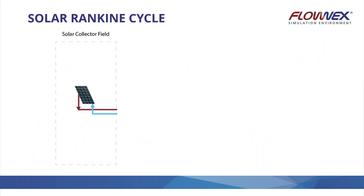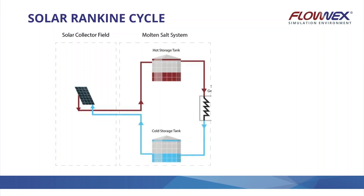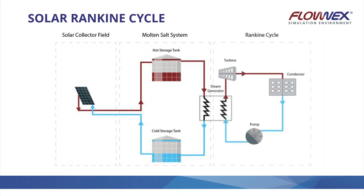Moving to the Solar Rankine Cycle: a solar collector field collects solar energy and transfers it to a working fluid on the molten salt side. We have a storage system for the molten salt with a hot side and a cold side. The Rankine cycle then uses the molten salt to heat up the working fluid — in this case water — to produce power.